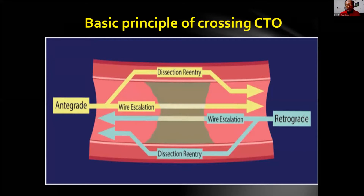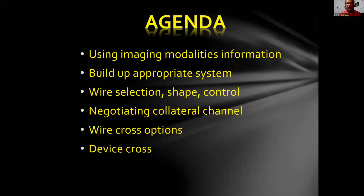I would like all of you to focus on this slide — this is the basic concept of doing CTO. You have to connect the proximal and distal lumen either antegradely or retrogradely, only by two methods: one — true lumen to true lumen wire escalation method; two — going into subintimal space and coming back to true lumen by dissection and re-entry method. These are the basic two methods for doing all CTO; no other method exists.